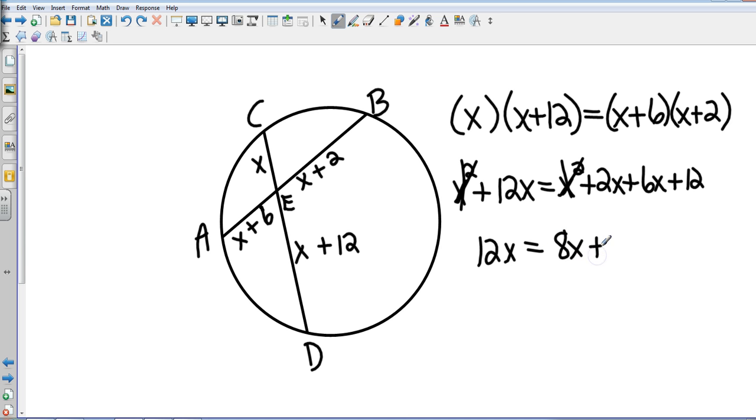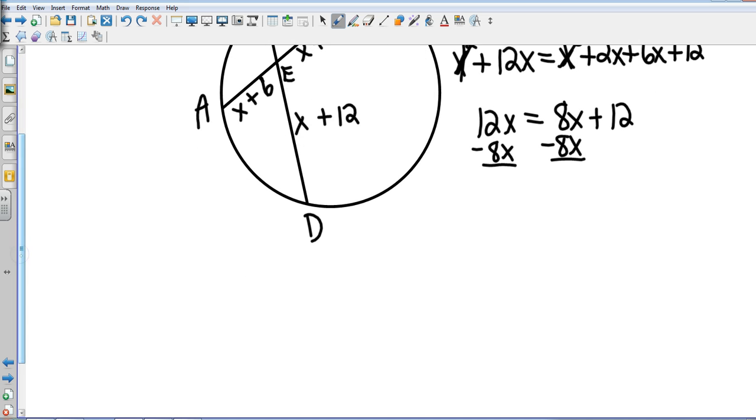Subtract our 8X from both sides and that gives us 4X equals 12. Divide both sides by 4, and our X length is 3.